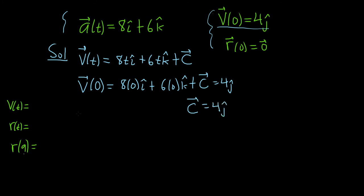Now we're going to take this and plug it back into v. So v of t is equal to 8ti hat plus 6t k hat plus 4j hat.